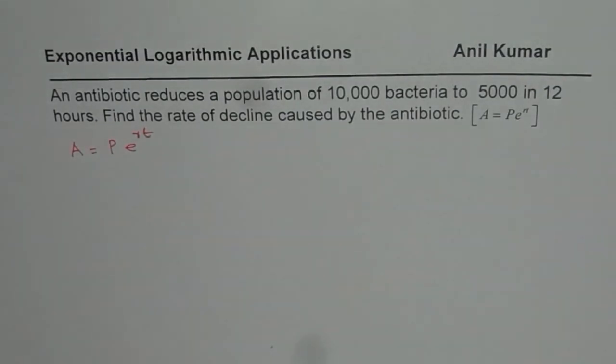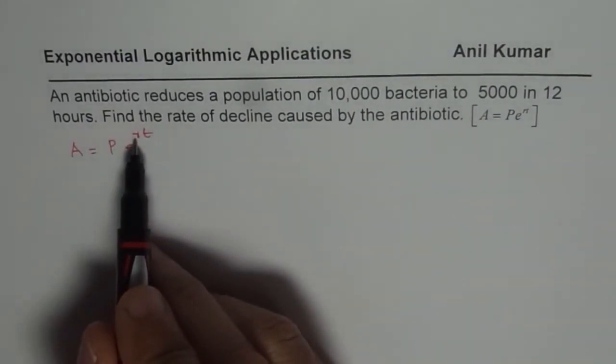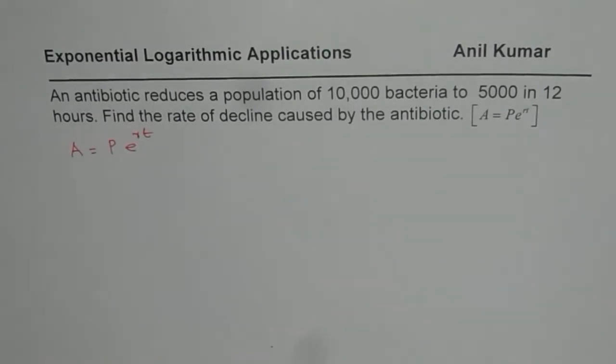Now, the question here is an antibiotic reduces population. Reduces population means the rate should be negative. The R should be a fraction. What I'm trying to say is the power should be negative. Anyway, let us use this formula and figure it out.